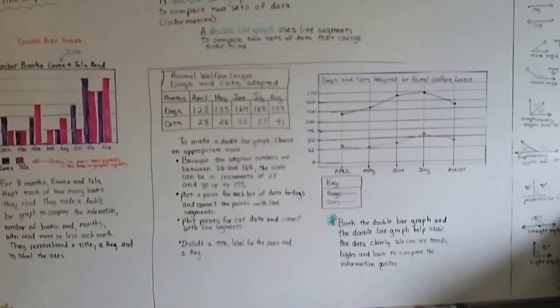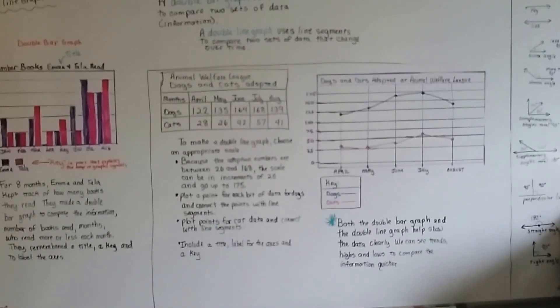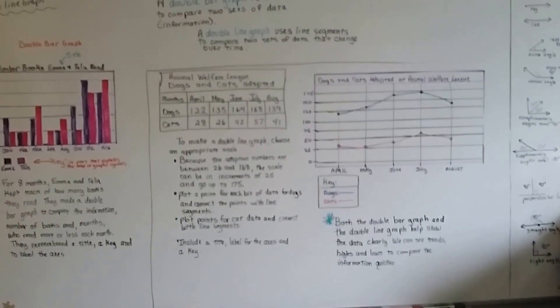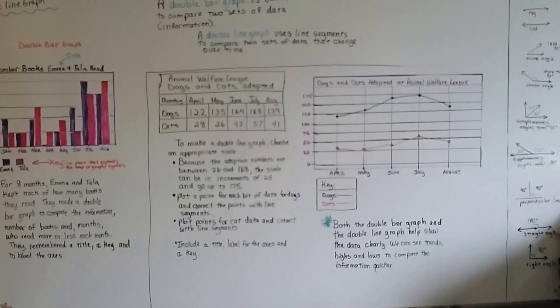Make sure you remember you've got a title. You label the axis going up and the axis going along the side horizontally. And make sure you have a key so people know what your graph is showing.